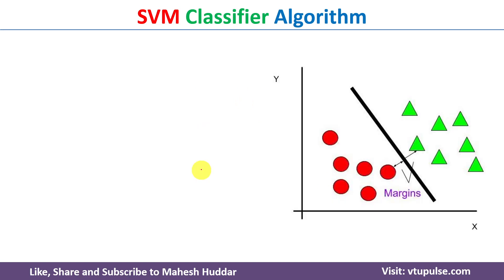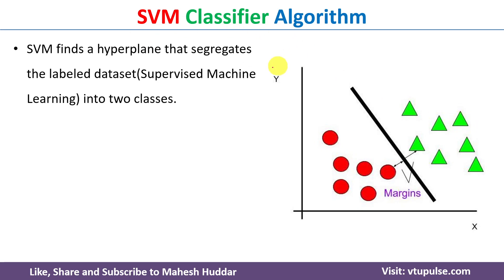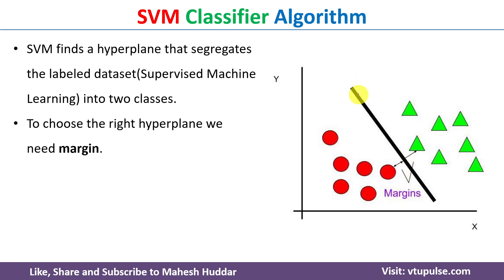Usually, SVM or Support Vector Machine is used to solve classification problems in machine learning. Now we will discuss the working principle of the SVM classifier. Given a dataset with multiple classes — in this case two classes, one represented with red circles and another with green triangles — the task of the SVM classifier is to find a hyperplane which can segregate the data into two classes. Here I have drawn a straight line in black color; this straight line will classify the data into two classes, and this is called a hyperplane.